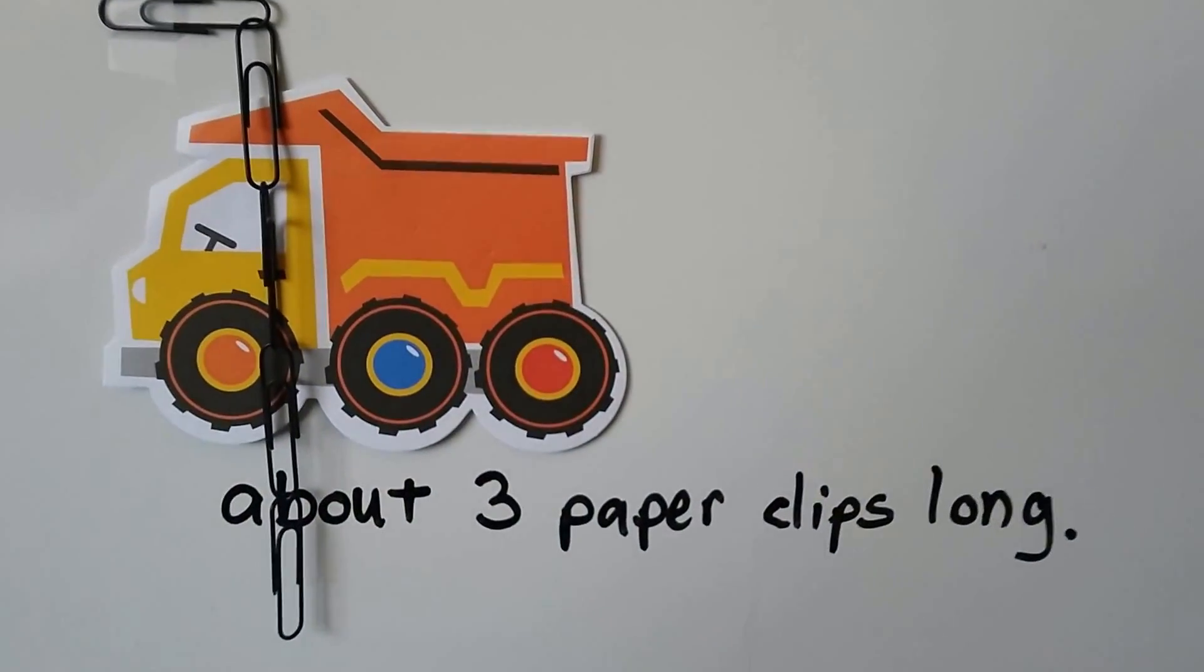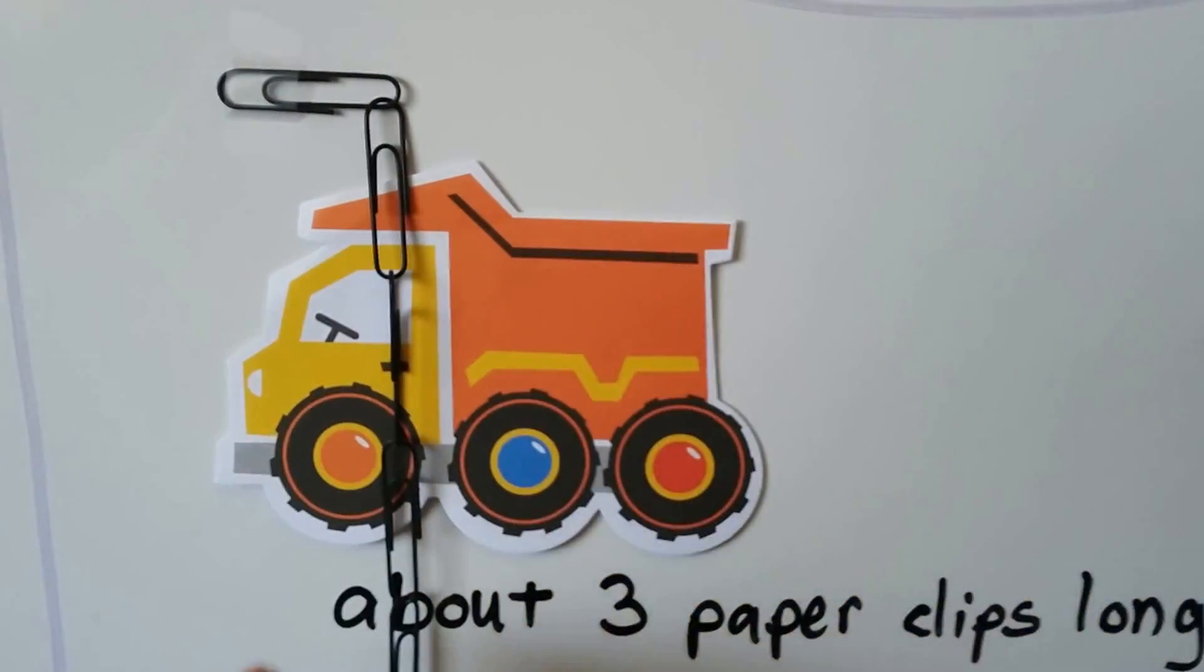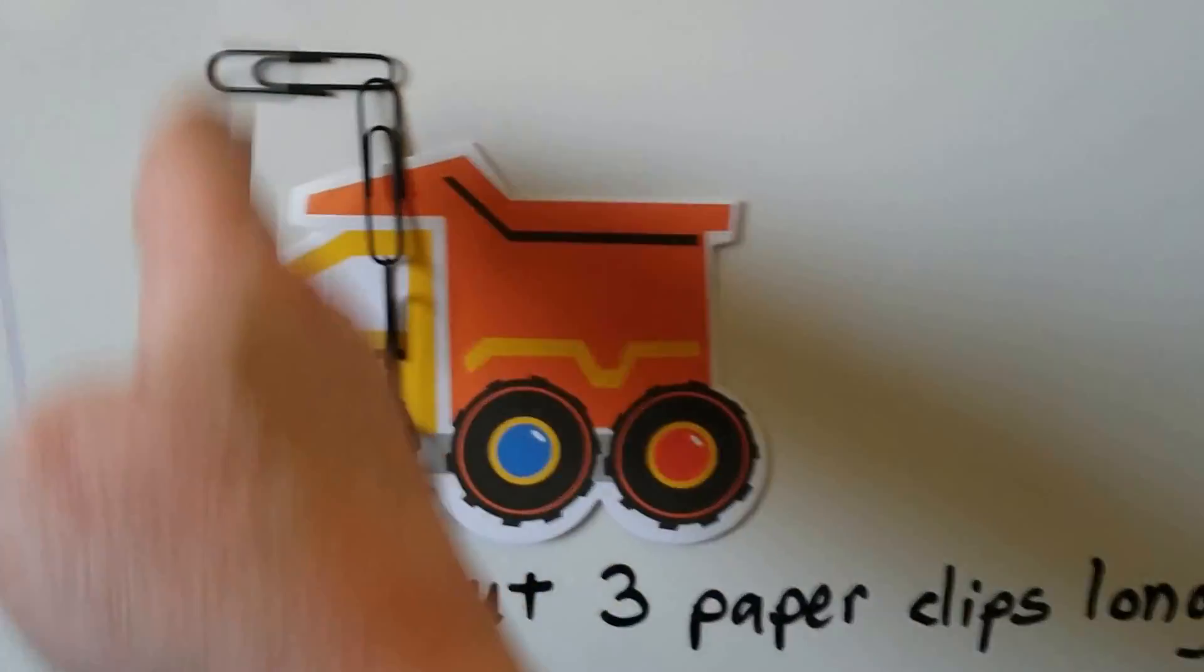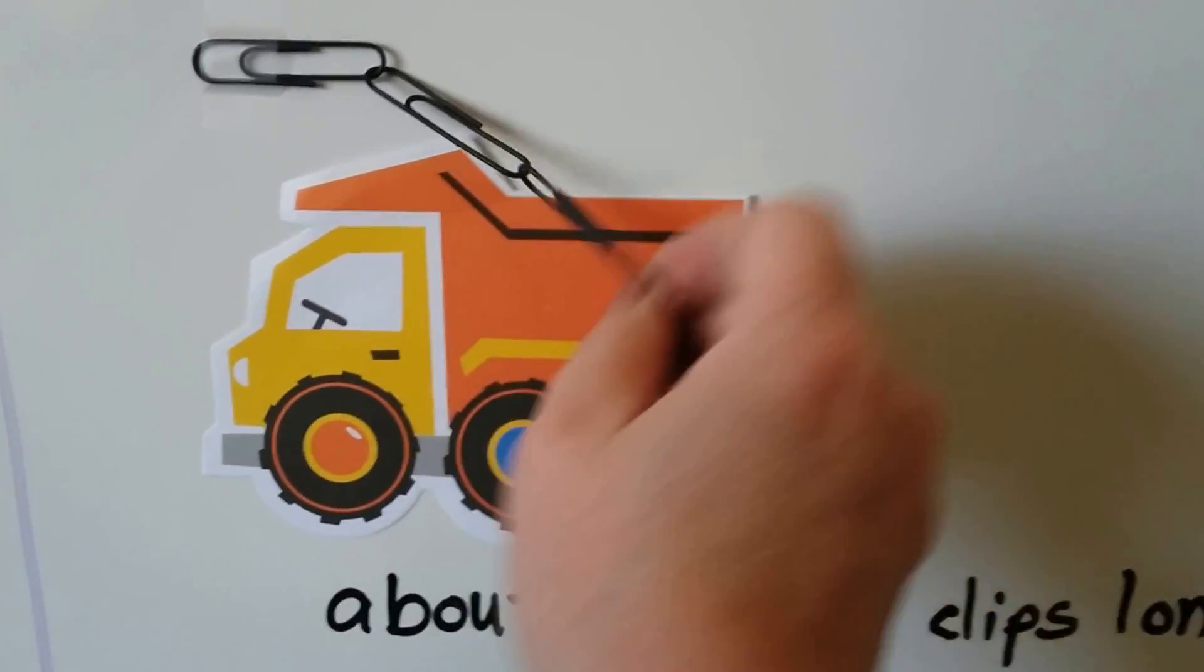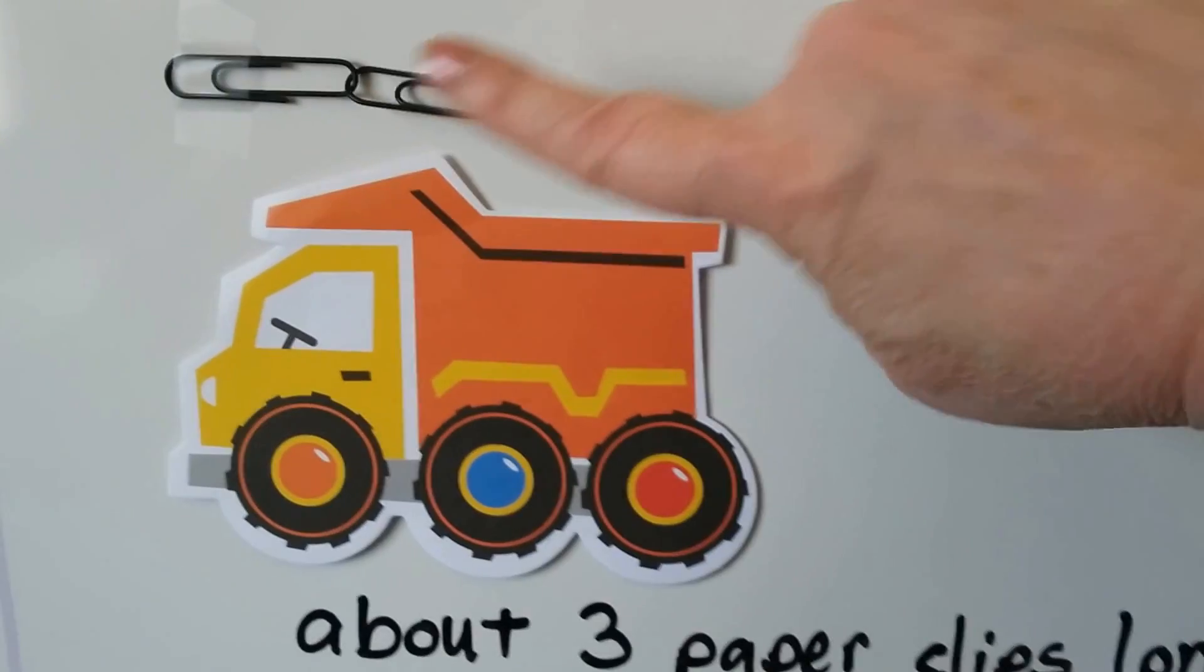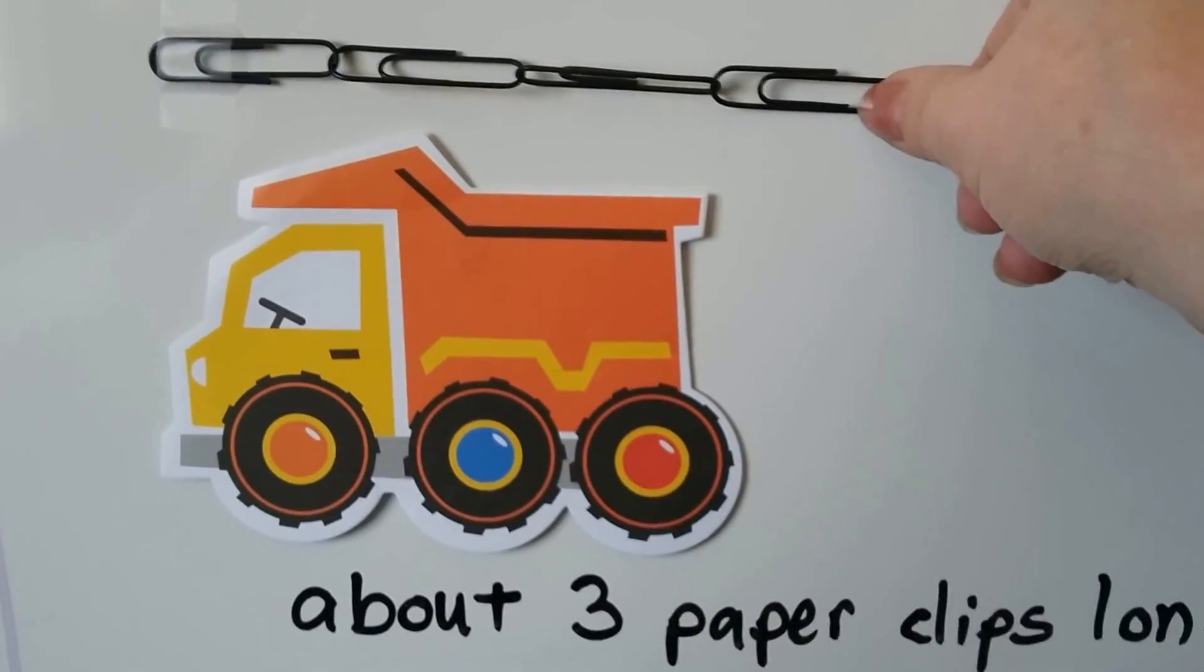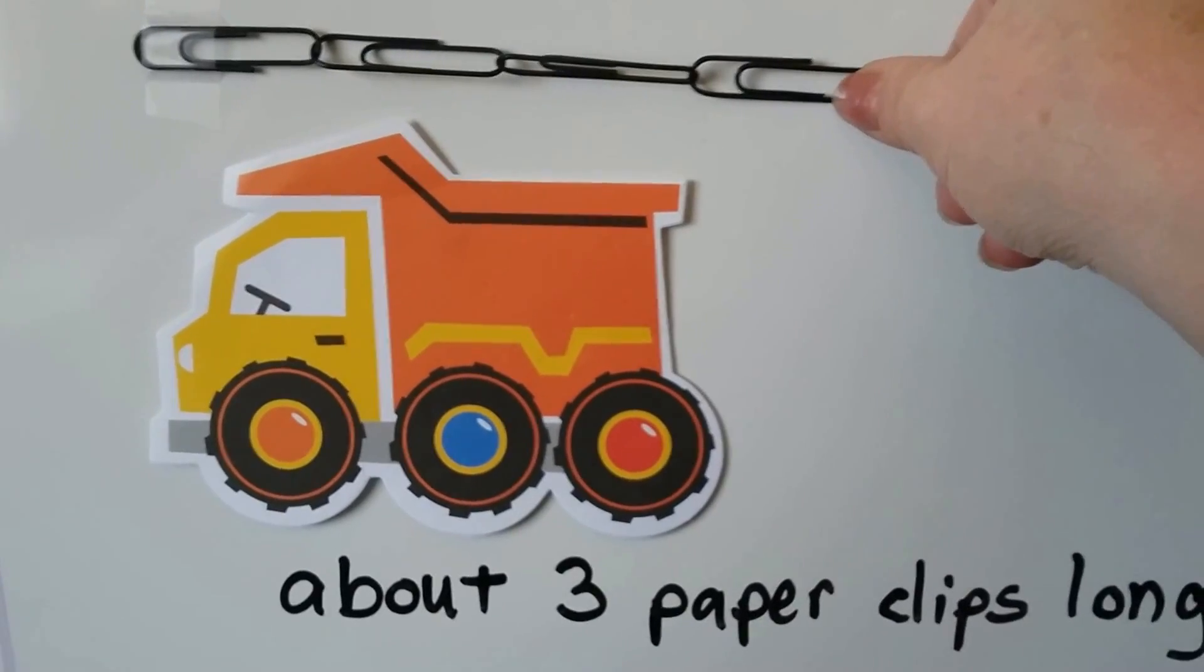This little picture of a toy truck is about three paper clips long. We line the paper clip measuring tool up with the edge of the truck. We hold it to the end and we can count one, two, three paper clips. It's about three paper clips long.